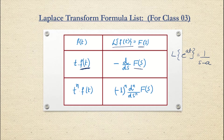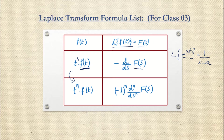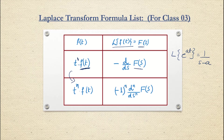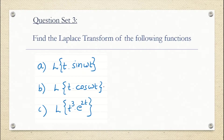Writing down the general form: the general form is t to the power n. Here you can say that multiplication by t is t to the power 1. So if it is t to the power n into f(t), this is n times we are multiplying t, and here it will be minus 1 to the power n, d^n by ds^n of F(s). We will see how to solve this type of formula in our questions.